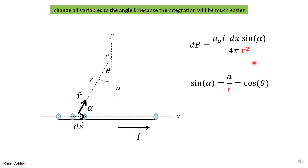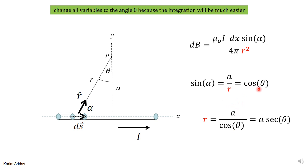Now what about r? We just found that a/r = cos θ, which gives us r = a / cos θ = a·sec θ. Therefore r² = a²·sec²θ. So we've now written sin α in terms of θ and r² in terms of θ. What's left is to write dx in terms of θ.